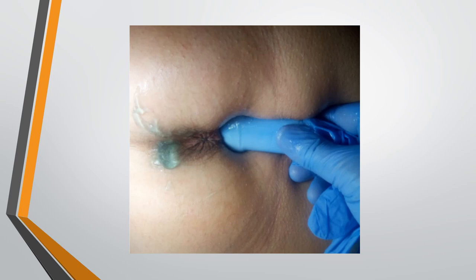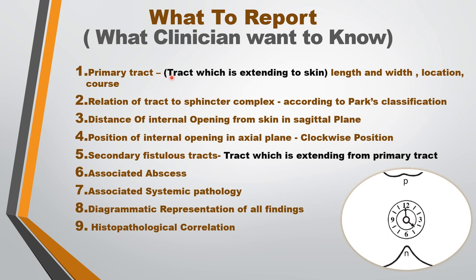For reporting, mention the primary tract — its length, width, location, and course. Mention the relation of the tract to the sphincter complex and classify the tract according to Parks classification. Mention the distance of the internal opening from the skin in the sagittal plane, the position of the internal opening in the axial plane in clockwise position, secondary fistula tracts extending from the primary tract, any associated abscess, and associated systemic pathology. Draw a diagram of all findings and suggest histopathological correlation to rule out systemic causes.